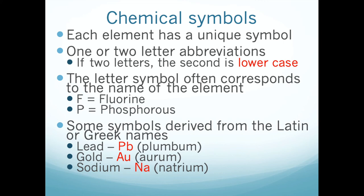In some cases the symbol is straightforward — fluorine is F, phosphorus is P, sulfur is S, oxygen is O. The first letter of the name represents the symbol used for that element. However, there are only 26 elements where we can use a single capital letter. You'll also notice that sometimes the symbol doesn't seem to match the name of the element.